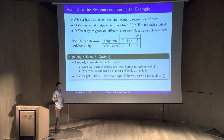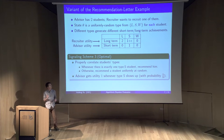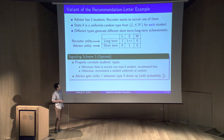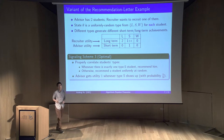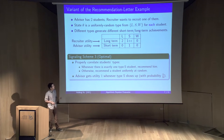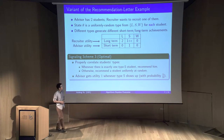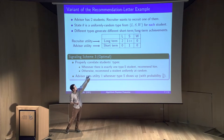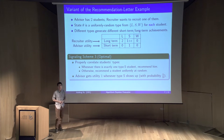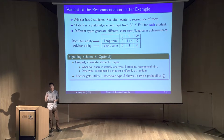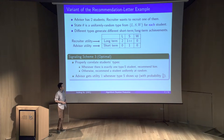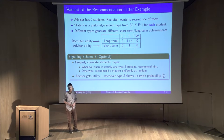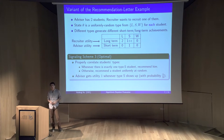The optimal signaling scheme requires properly correlating the students' types. Whenever there is exactly one S-type student, recommend that student; otherwise, uniformly randomly recommend a student. This scheme is incentive compatible because the long-term utility of an S-type student is greater than a uniform mixture of L-type and W-type, which is just one. Whenever an S-type student shows up, he gets recommended, which happens with probability five over nine, giving the advisor utility five over nine.